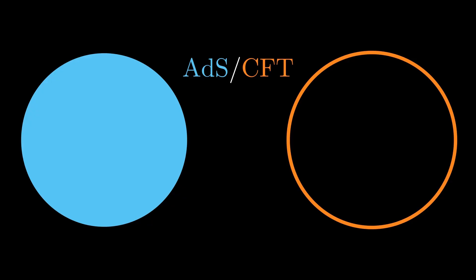ADS, or Antidesider space, is a specific solution to Einstein's equations of general relativity with a negative cosmological constant. ADS refers to the bulk theory, and there is gravity in the bulk.